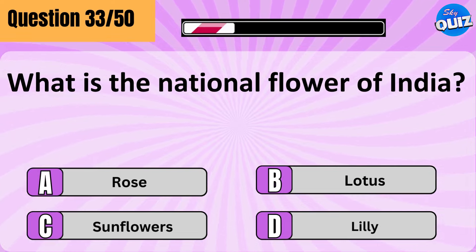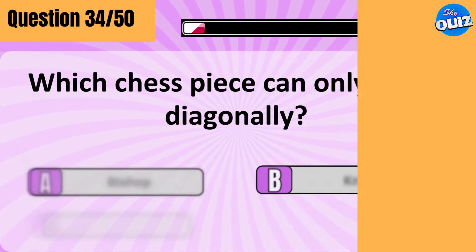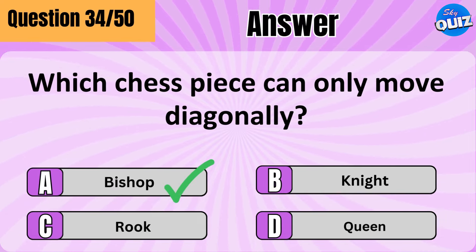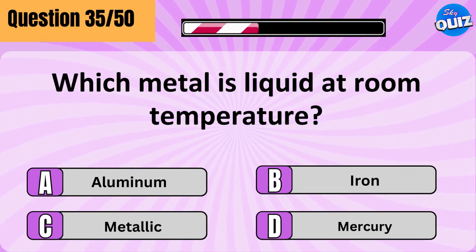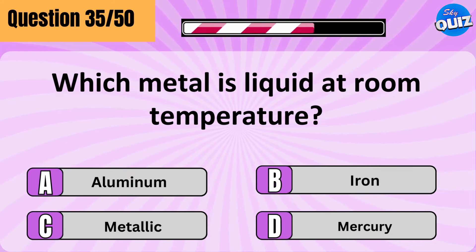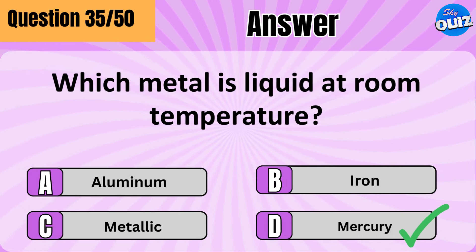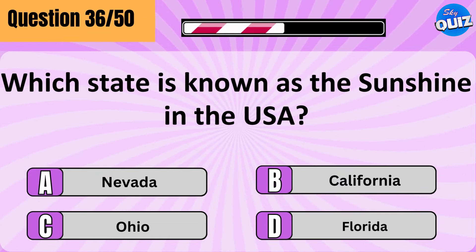What is the national flower of India? Lotus. Which chess piece can only move diagonally? Bishop. Which metal is liquid at room temperature? Mercury.